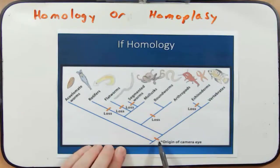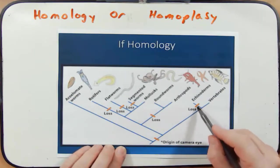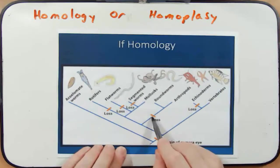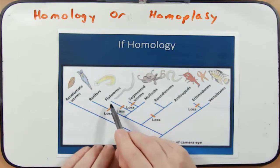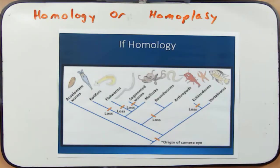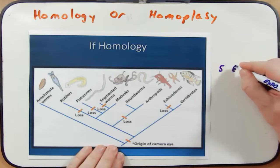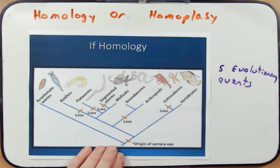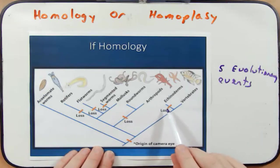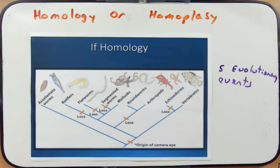If the complex camera eye evolved from a common ancestor through homology, we can count the steps. If the common ancestor had the camera eye, it would have been maintained in vertebrates, but it would have had to be lost in echinoderms, arthropods, roundworms, rotifers, flatworms, and segmented worms, and persisted in molluscs. That gives us five independent evolutionary events. Additionally, the fossil record should show evidence of that eye being lost, but we just don't see that.